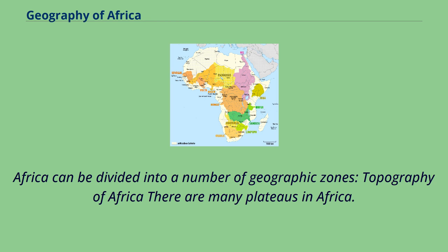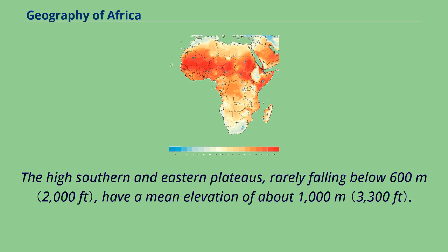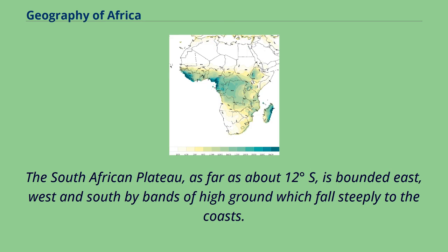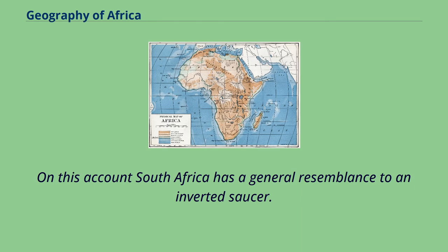Africa can be divided into a number of geographic zones. There are many plateaus in Africa. The high southern and eastern plateaus, rarely falling below 600 meters, have a mean elevation of about 1,000 meters. The South African plateau, as far as about 12 degrees south, is bounded east, west and south by bands of high ground which fall steeply to the coasts. On this account South Africa has a general resemblance to an inverted saucer.